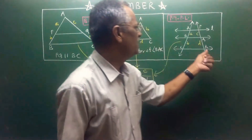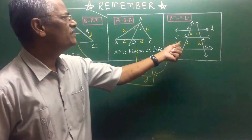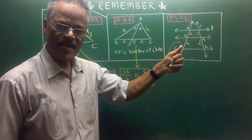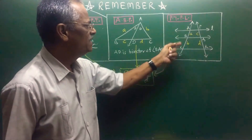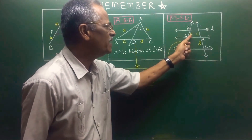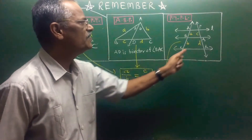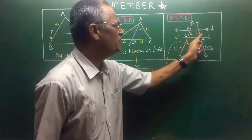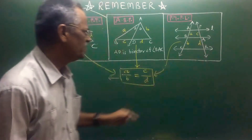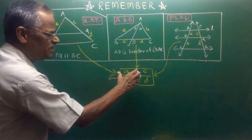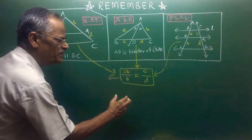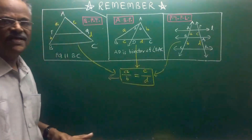Similarly, in the third property — the Property of Three Parallel Lines — AB upon BC, in short A upon B, is equal to PQ upon QR, that is C upon D. If we use this, the result is A upon B is equal to C upon D.